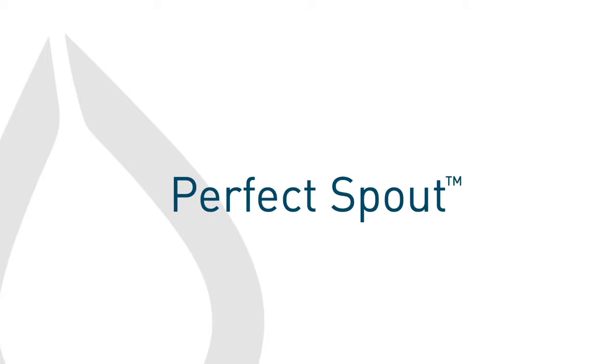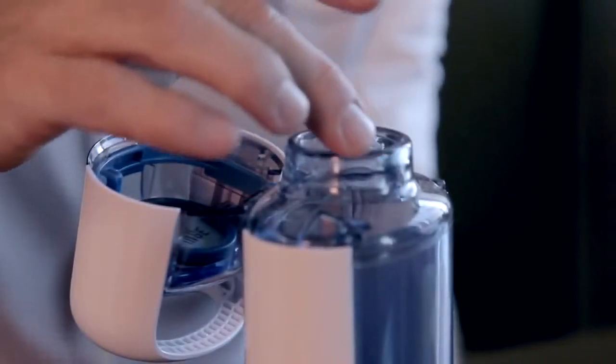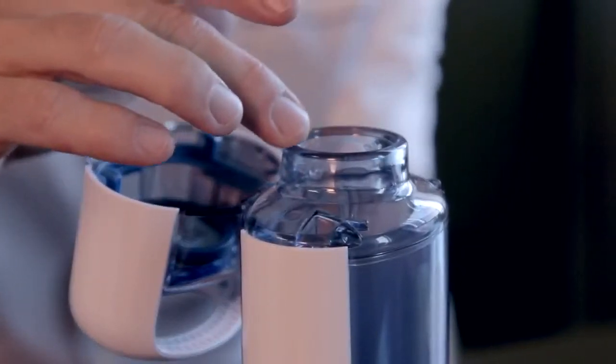The Core One features our perfect spout. It's a threadless rounded lip that creates an amazing drinking experience. It's large enough for ice cubes and for chugging, but also small enough to minimize splashes.